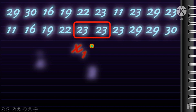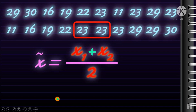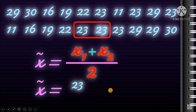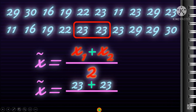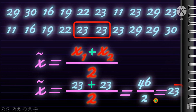The two middle values — x-sub-1 and x-sub-2 — are both 23. So the median equals 23 + 23 divided by 2. That gives us 46 divided by 2, which equals 23. That is your final answer.